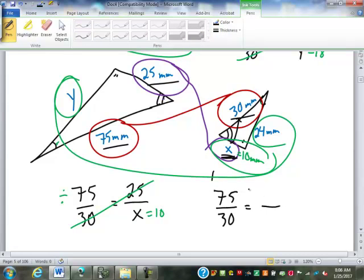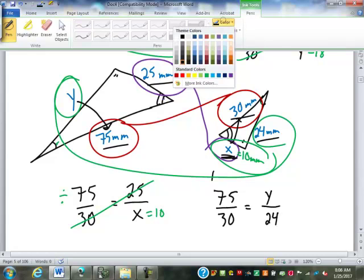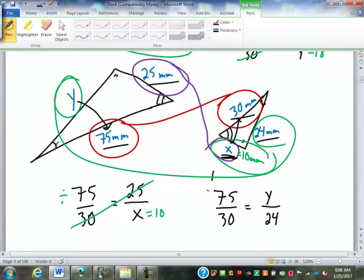Now to find Y. Where is Y going to go? Top or bottom? Y is with the 75. So that goes on top. What goes with the Y? 24 is the corresponding side from the other triangle. So we are going to cross multiply and divide. 75 times 24 divided by 30 is 60, right? Y is 60.